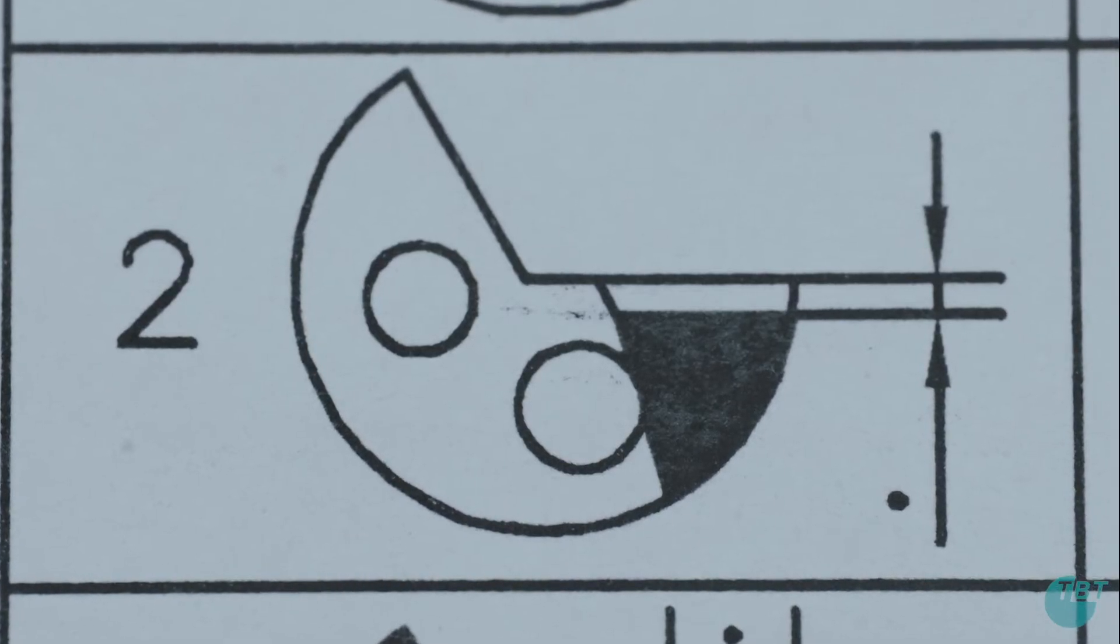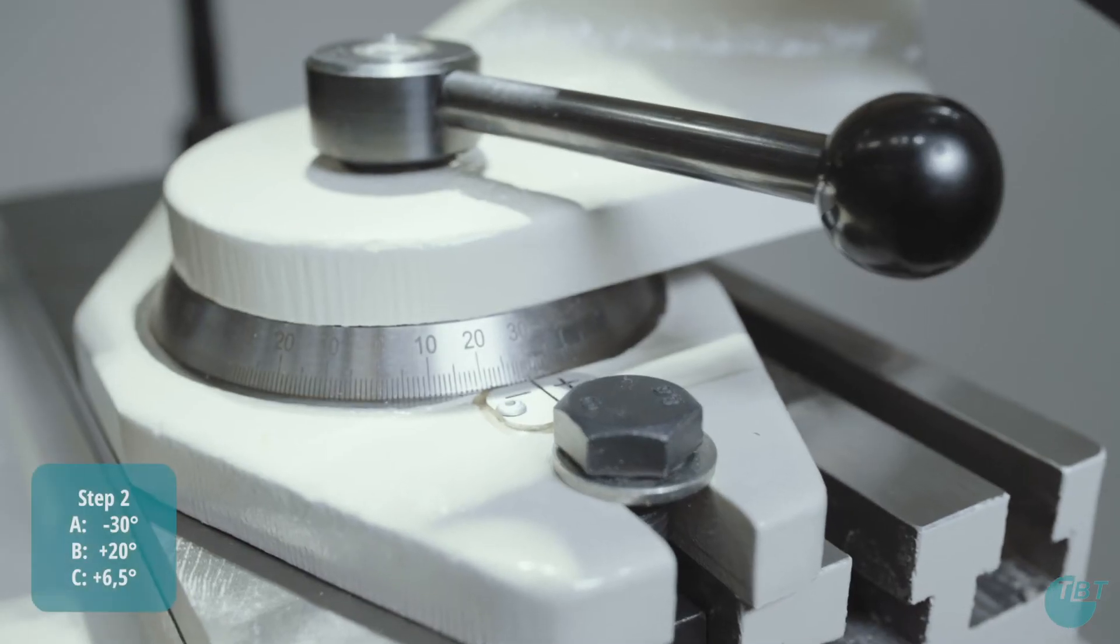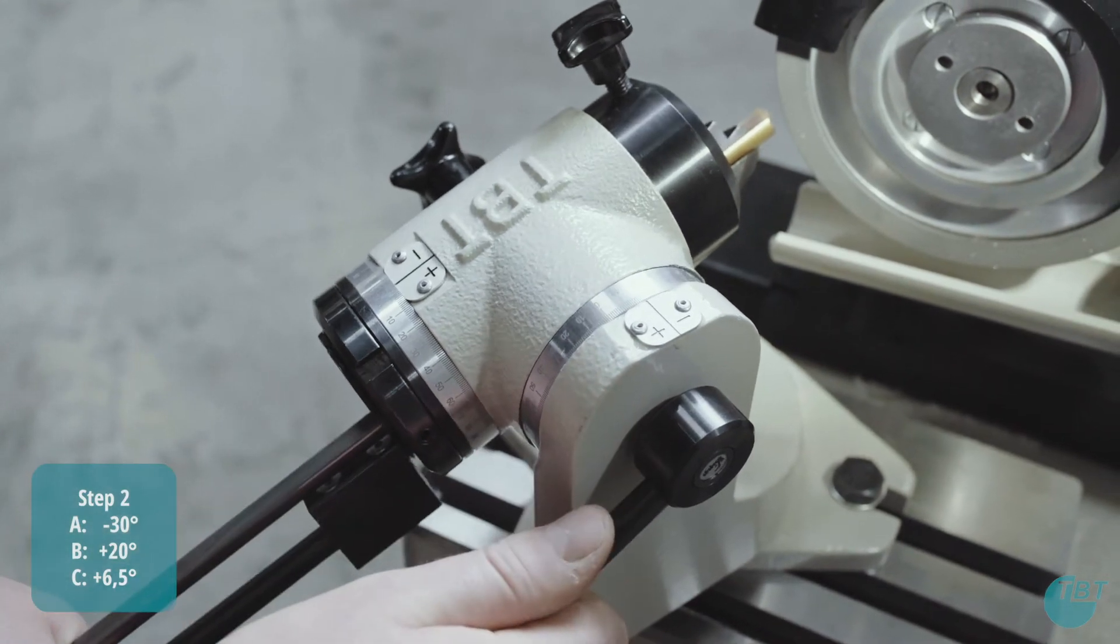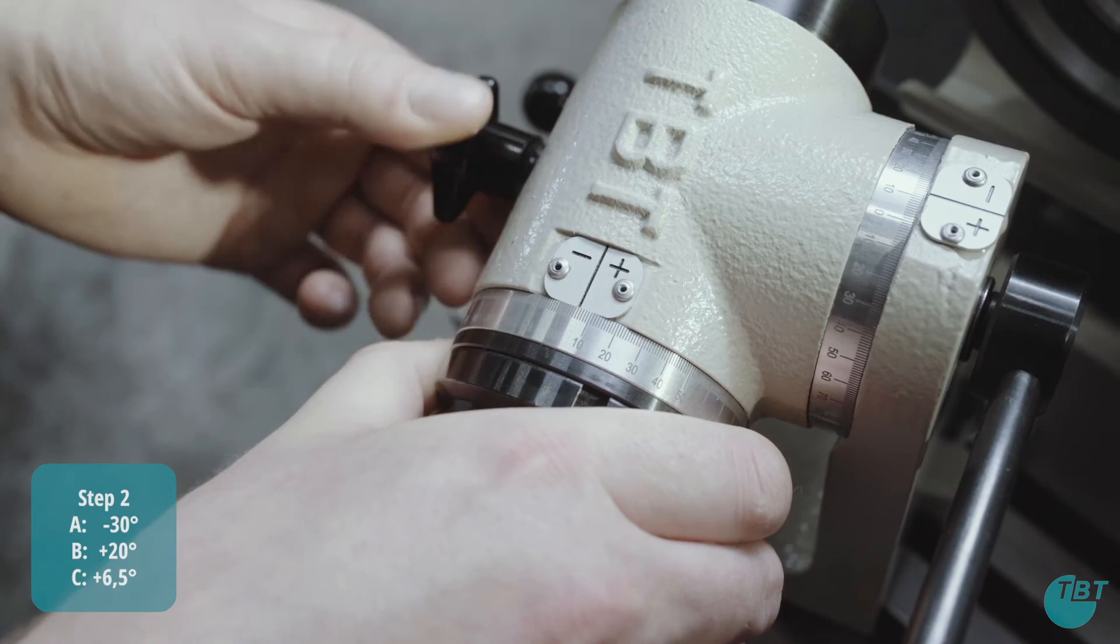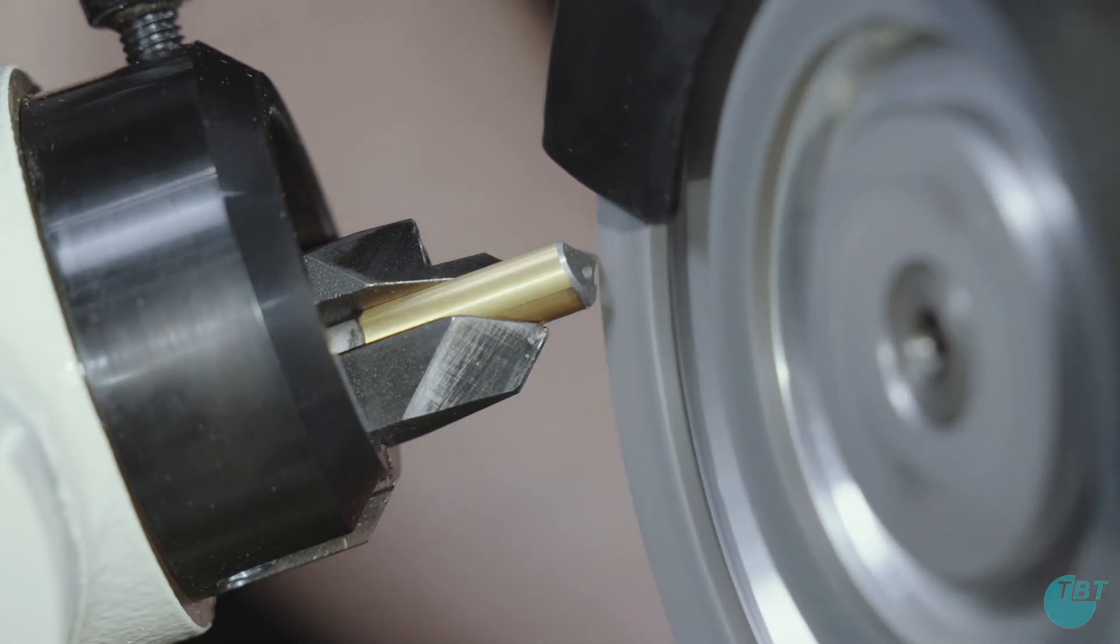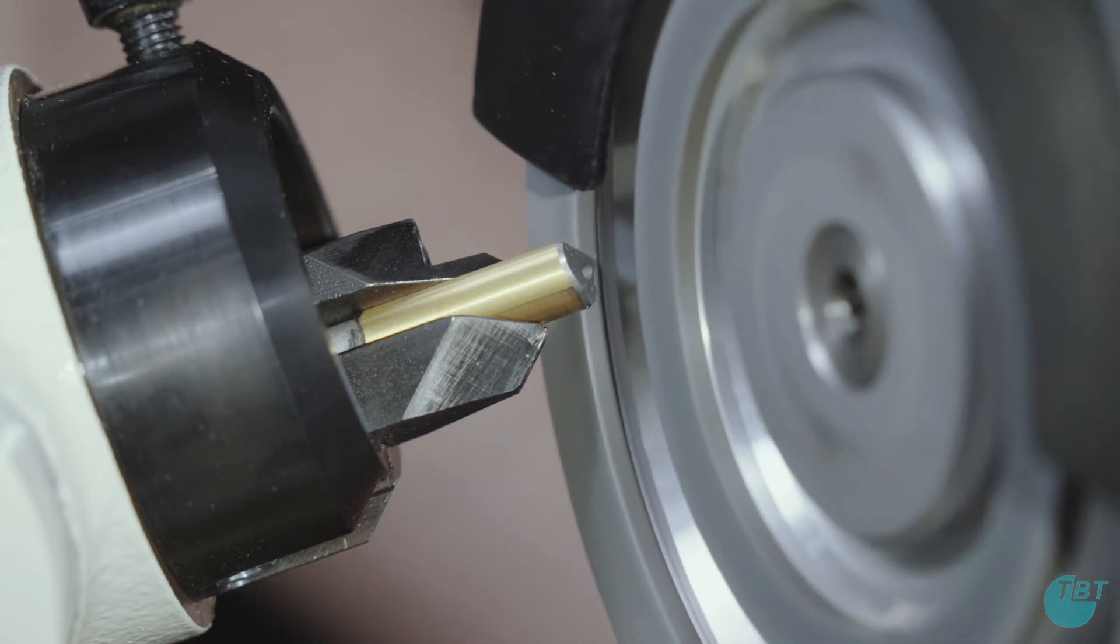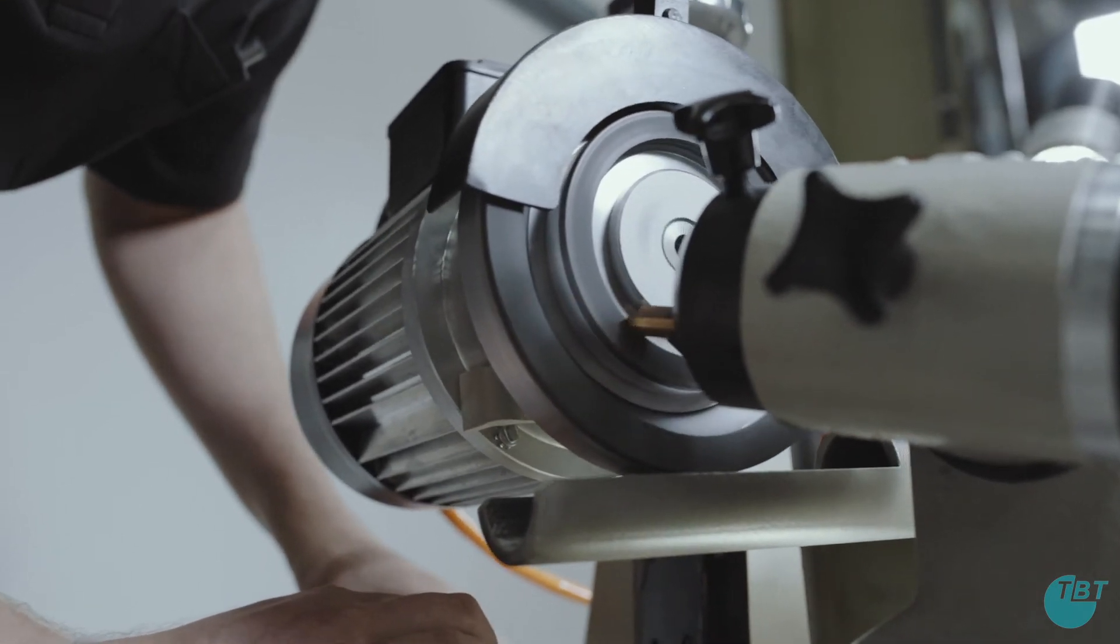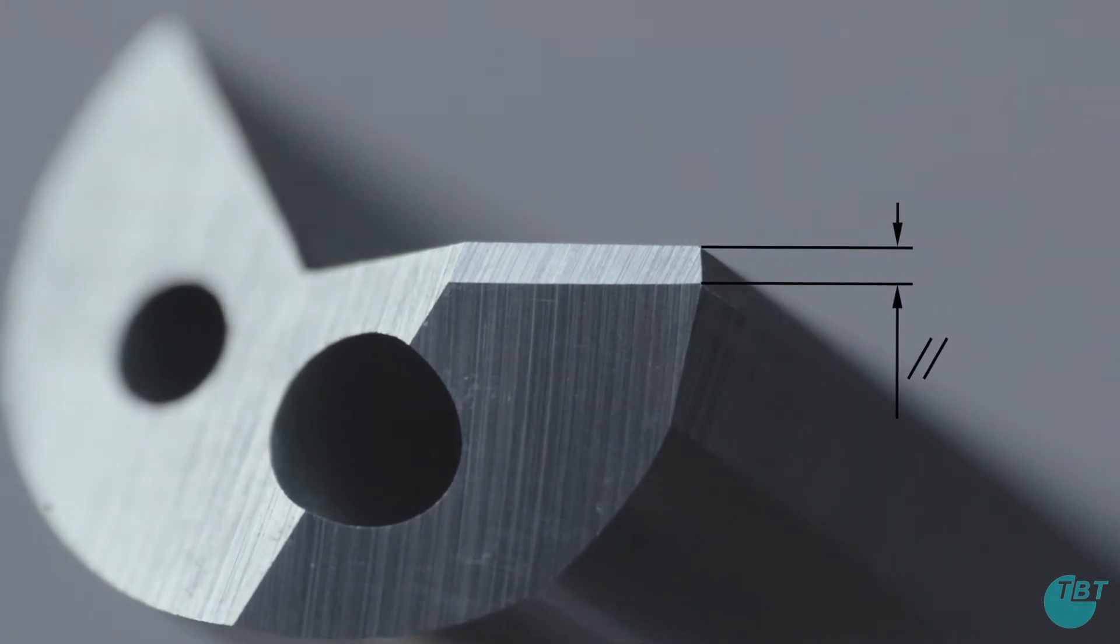The next step is to grind the relief of the outer cutting edge. Leave the A axis at minus 30 degrees, set the B axis to plus 20 degrees and the C axis to plus 6.5 degrees. Pre and finish grind until the outer cutting edge has a width of 0.3 to 0.5 mm and is as parallel as possible.